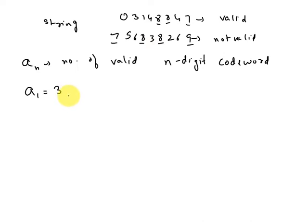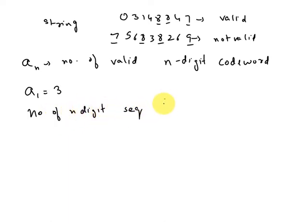The total number of n-digit sequences from the set {0, 1, 2, ..., 9} is 10 to the power of n.